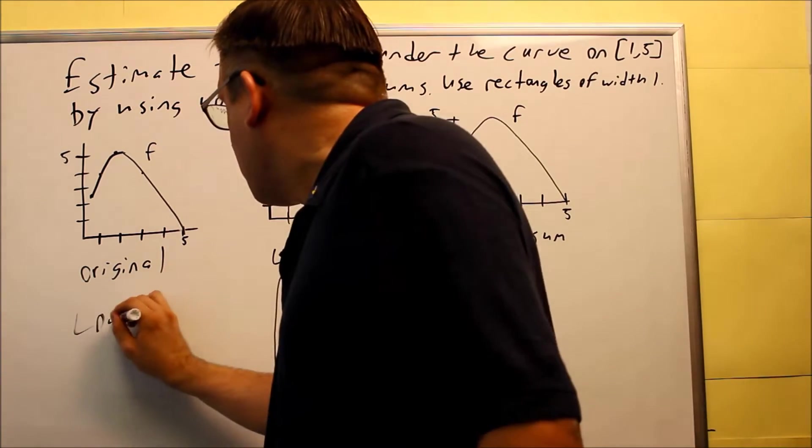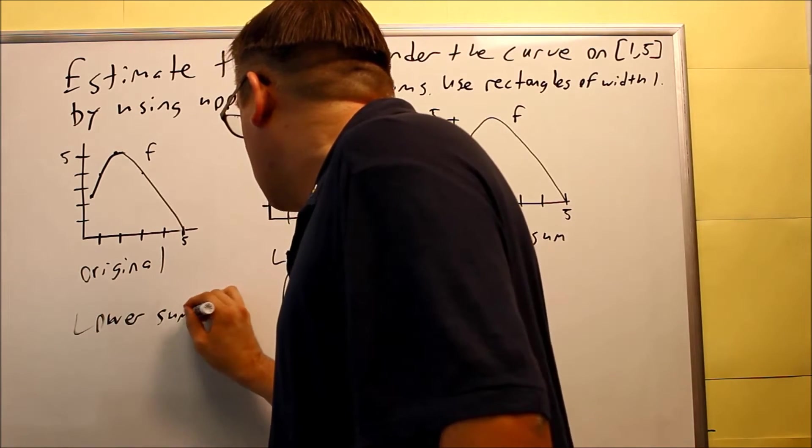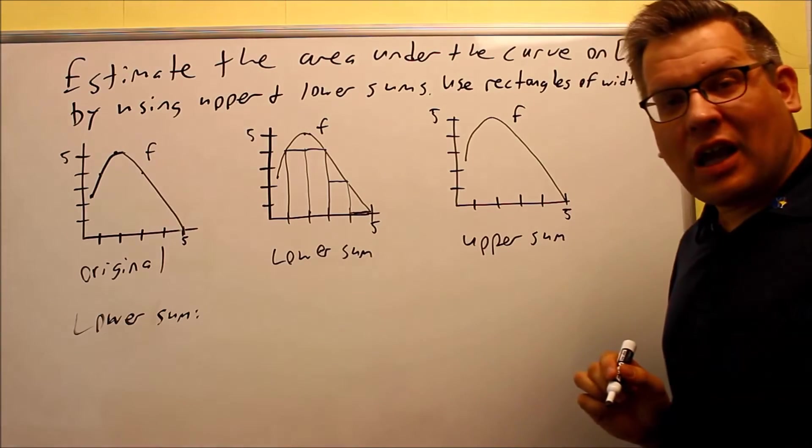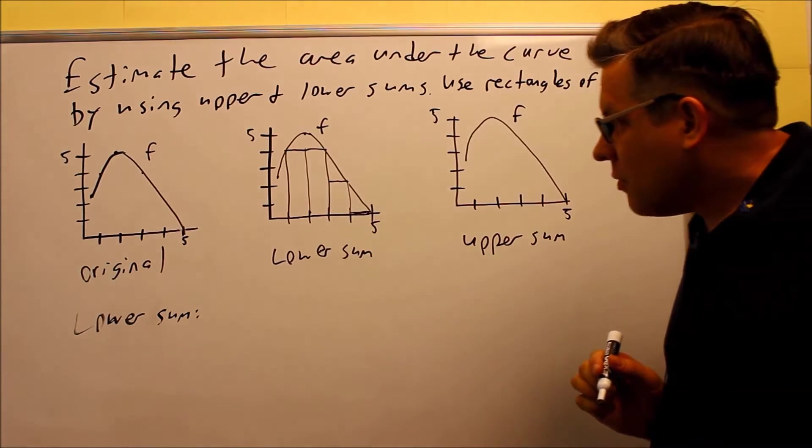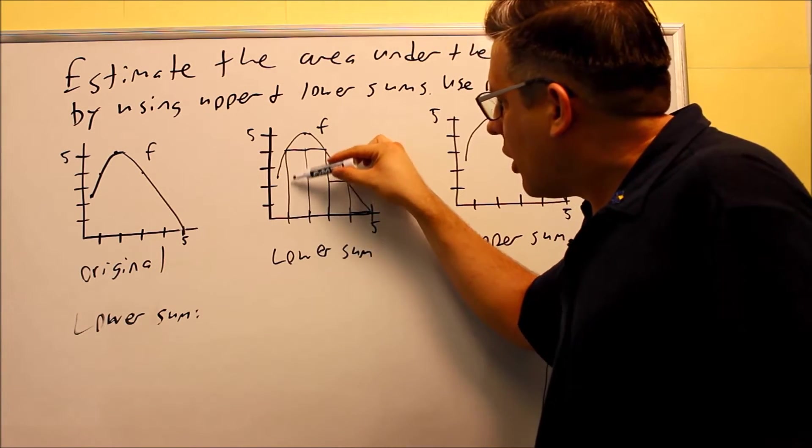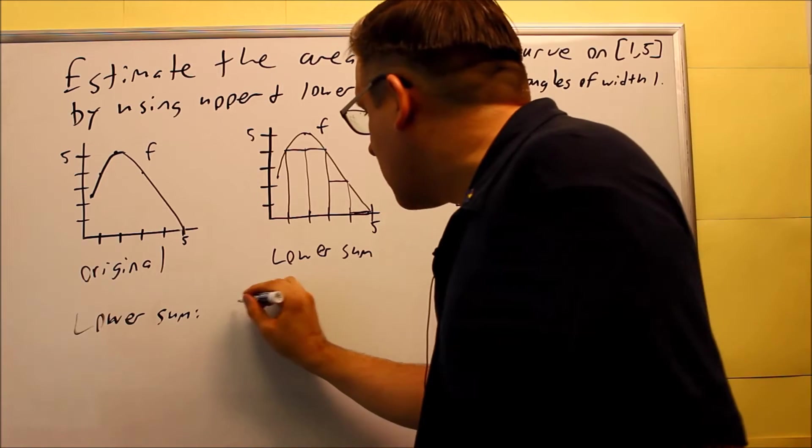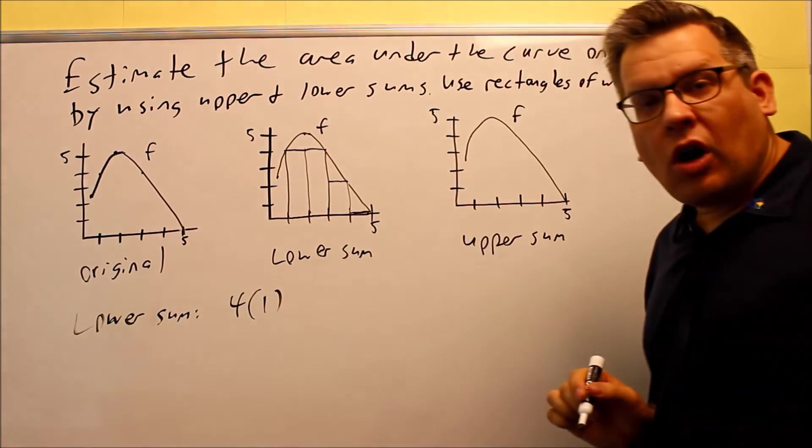So, let's do lower sum, as far as the area is concerned. We need to take the area of each of these rectangles that we have inside here. So, the first one, we're going to read the height. Now, the height off the graph, that's going to be at 4. So that would be the length, would be 4, and the width is going to be 1.